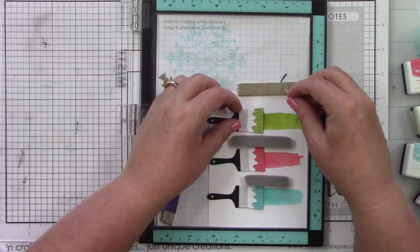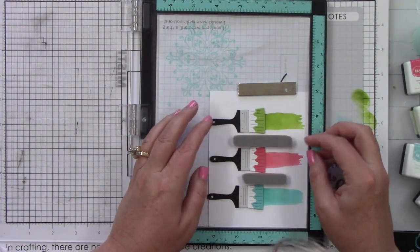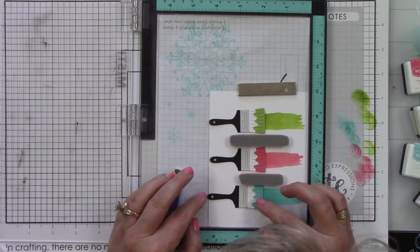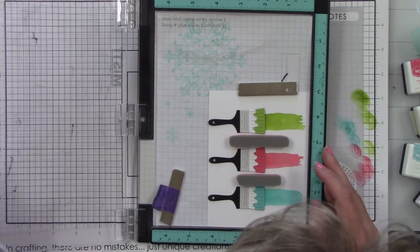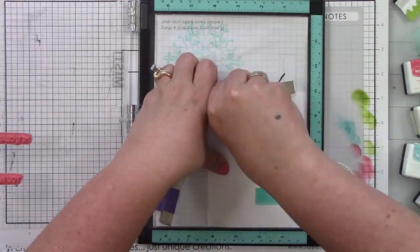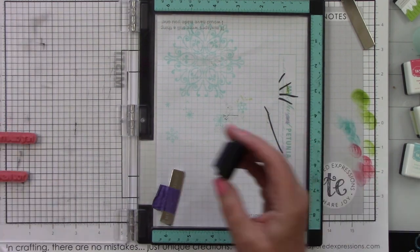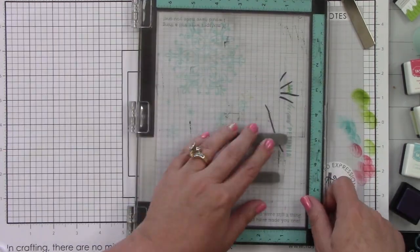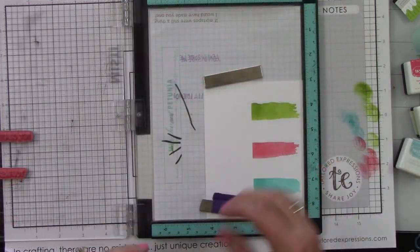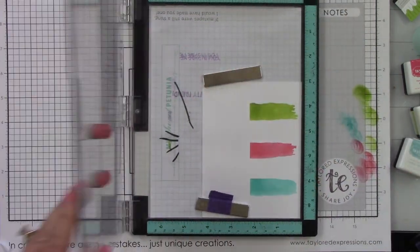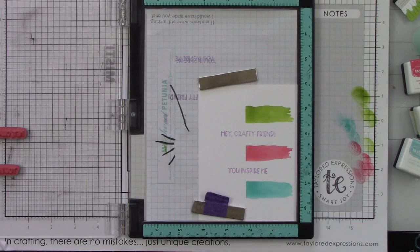So that one was super easy to do. Let's peel that back. I know it looks funny now but it'll look really good when we're done. Let's do the sentiments in between. These sentiments are from the With All My Art stamp set, and it's going to say 'Hey crafty friend, you inspire me.' I'm stamping it with the Lavender Glaze. That way I can have all four colors on this card, so all of the cards will have all four colors. I just might do it in different ways.